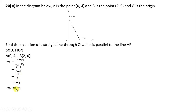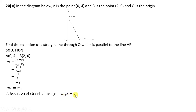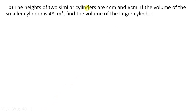Parallel lines have the same gradient, so m2 = −2. Since the line passes through the origin O, the y-intercept c = 0. The equation of the line is y = −2x + 0, therefore y = −2x.